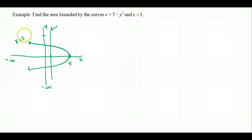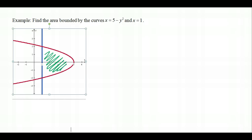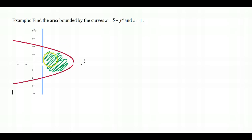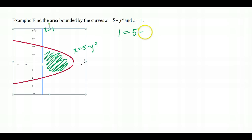Looking at the nicer graph, there is a distinct right minus left situation: the parabola x = 5 − y² is on the right and x = 1 is on the left. Both functions are already in terms of y, so I only need the limits of integration. Setting the two functions equal: 1 = 5 − y², so y² − 4 = 0, factoring to (y − 2)(y + 2) = 0, giving y = 2 and y = −2 as the limits of integration.